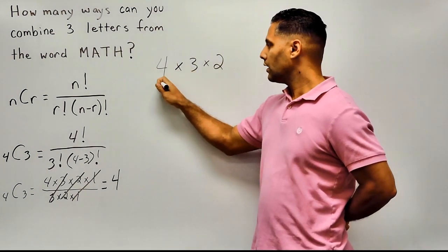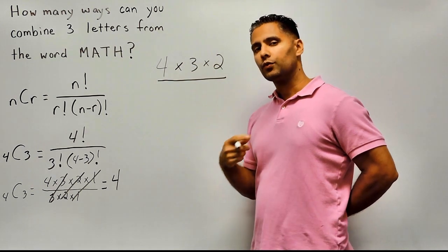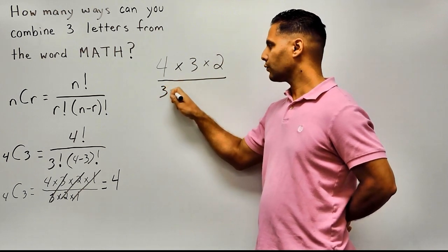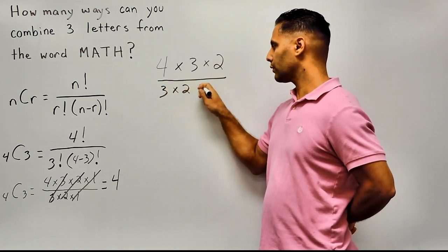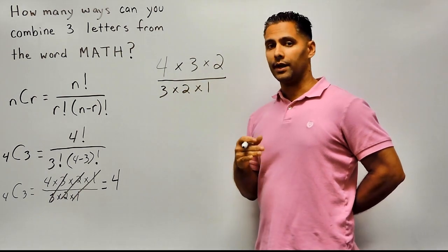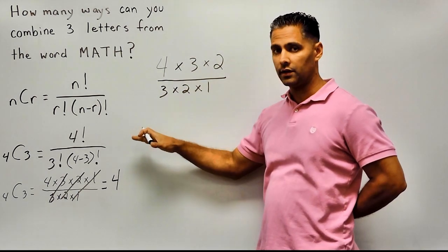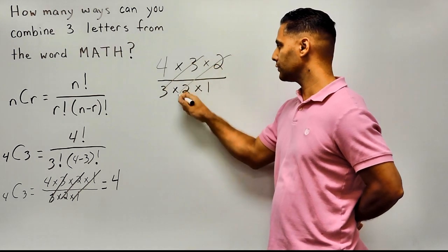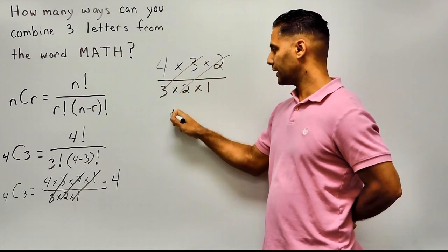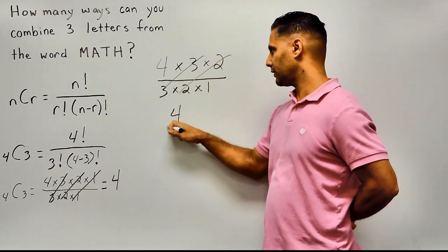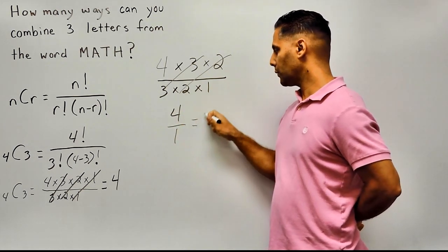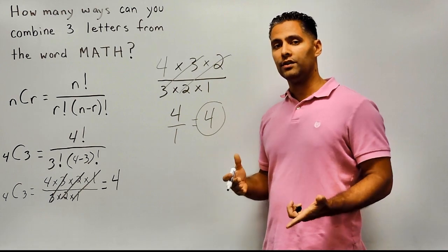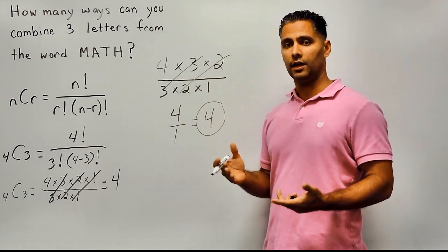For your denominator, just write how many things you are selecting. We are selecting three objects, so write the entire factorial going all the way to one: three times two times one. You can stop right there and solve for what you have. Cancel out the threes and the twos, leaving a value of four in the numerator and one in the denominator. Four divided by one is four — the same answer. There are four ways you can combine three of the four letters in the word MATH.